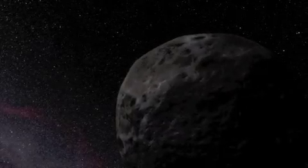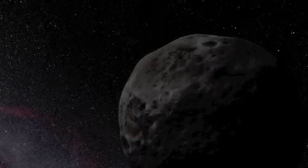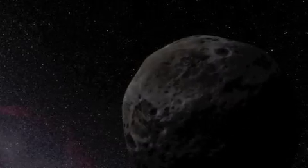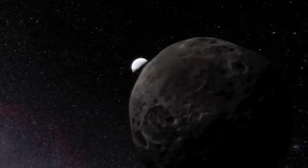Because Eris also has a moon, called Dysnomia, astronomers have also been able to calculate the mass of Eris, by a careful study of this moon's orbit.